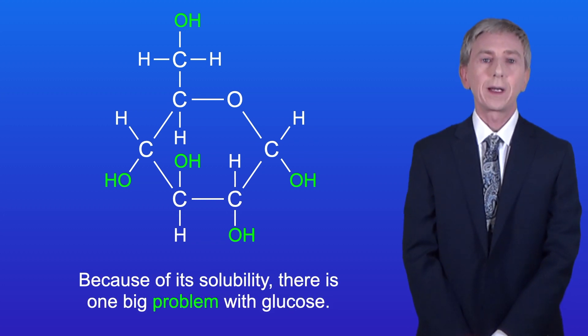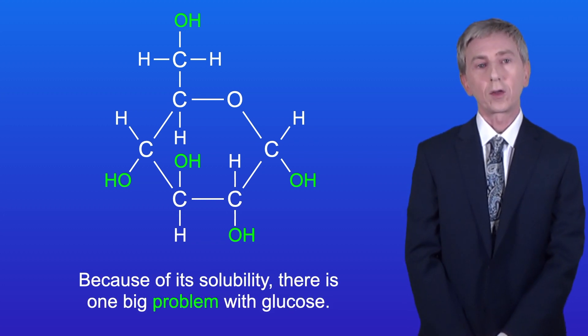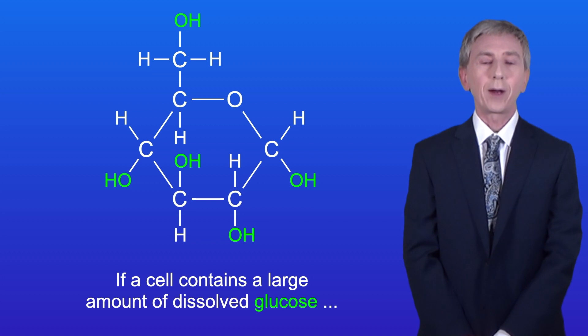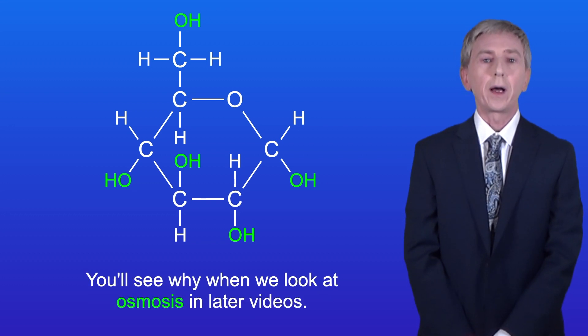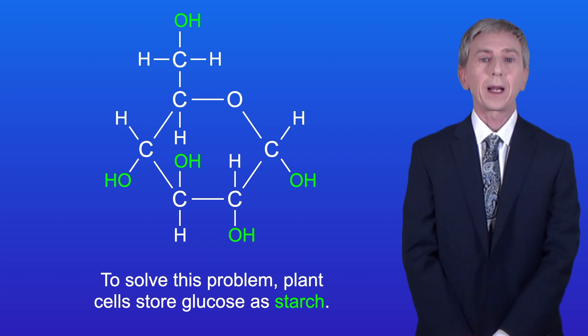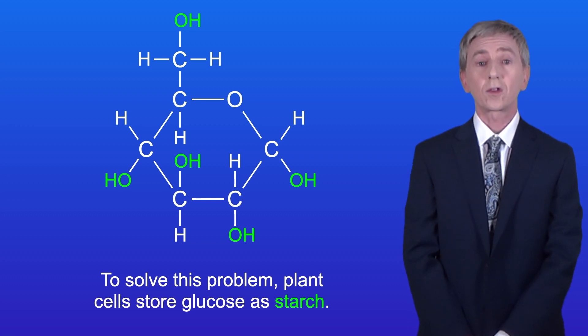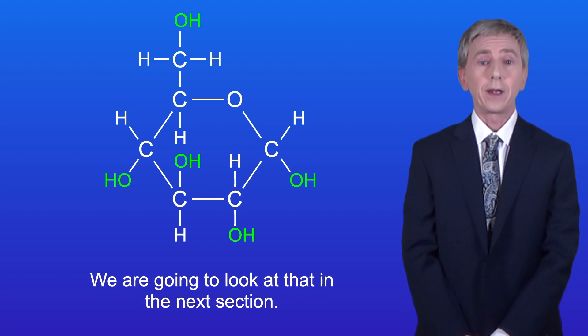Now because of its solubility, there is one big problem with glucose. If a cell contains a large amount of dissolved glucose, then this can cause water to move into the cell by osmosis. You will see why when we look at osmosis in later videos. So to solve this problem, plant cells store glucose as starch.